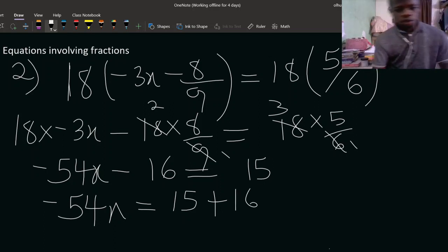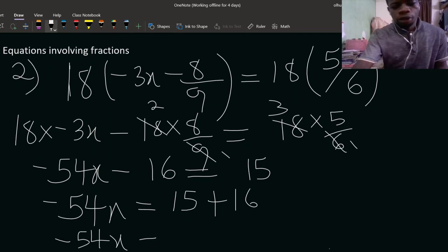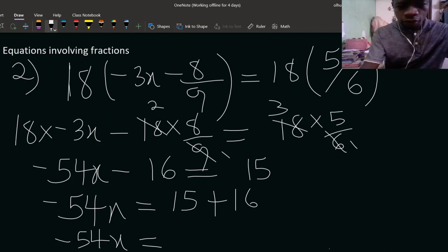We're supposed to add 16 to both sides here so that you cancel out the 16. We have 15 plus 16 here. Then what do you have? Minus 54x can be equal to what?